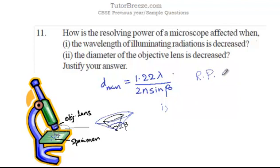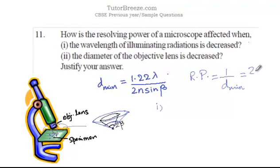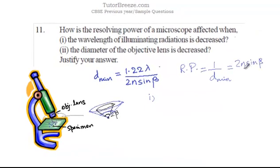If lambda is decreased then the minimum distance that can be distinguished will decrease, or the resolving power will increase because the resolving power is the reciprocal of the minimum distance, which is 2n sin beta over 1.22 lambda. If the minimum separation is less, the resolving power is more. So if lambda is decreased, the resolving power will increase since lambda is in the denominator.